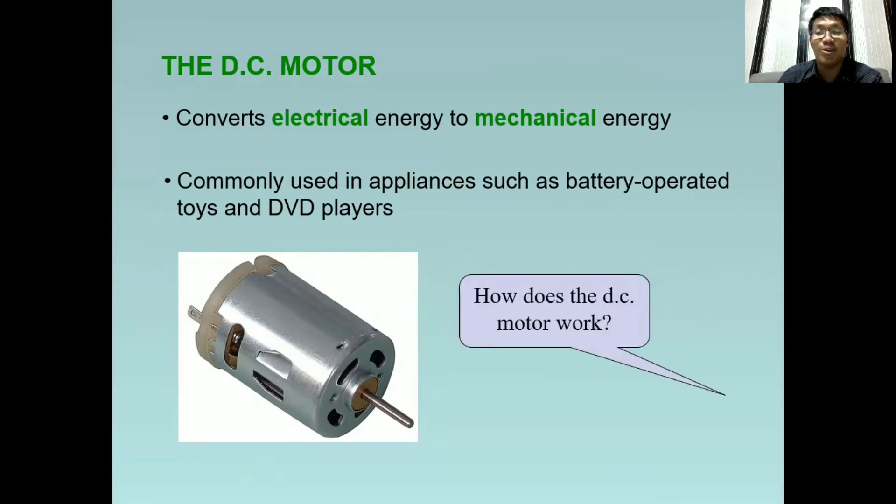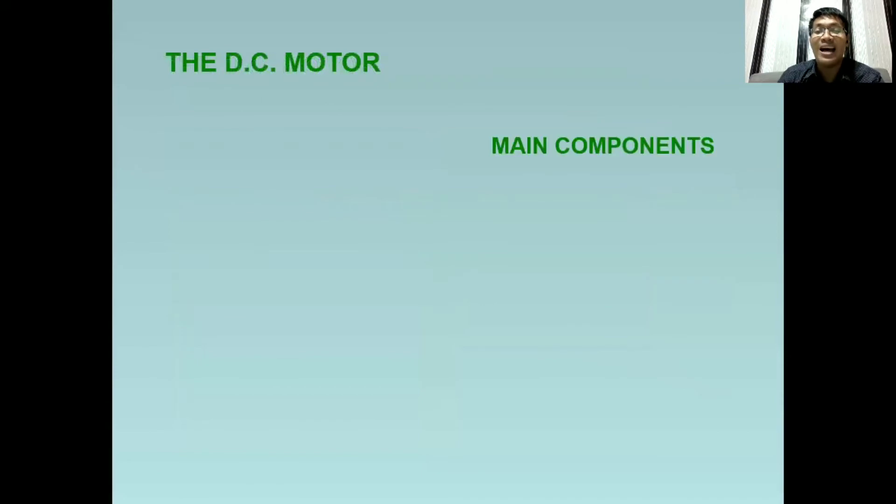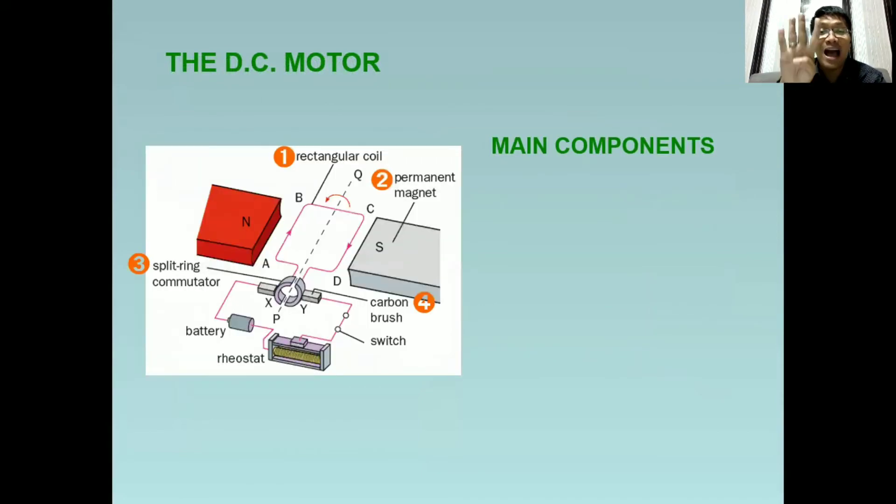The next question is, how does the DC motor work? First, let's identify the components. We have four primary components of DC motor. The first one is the rectangular wire coil, the pink color in our diagram. Second is the permanent magnet, the north and the south.